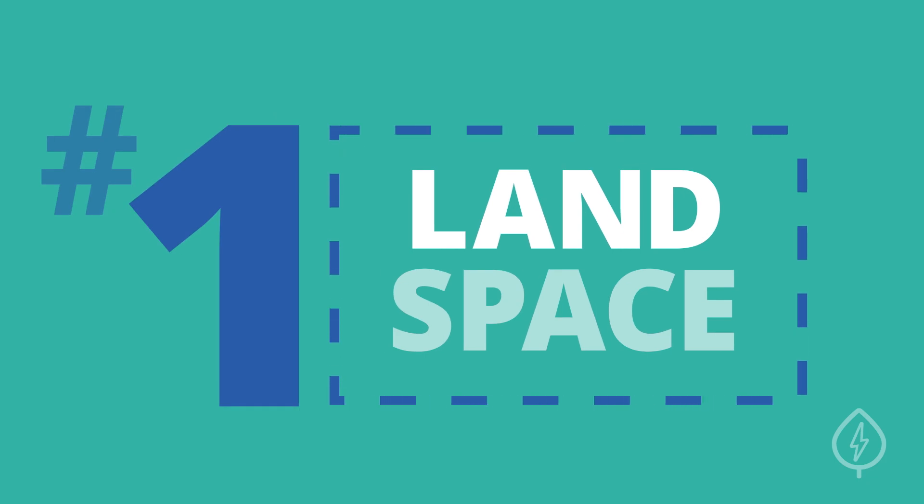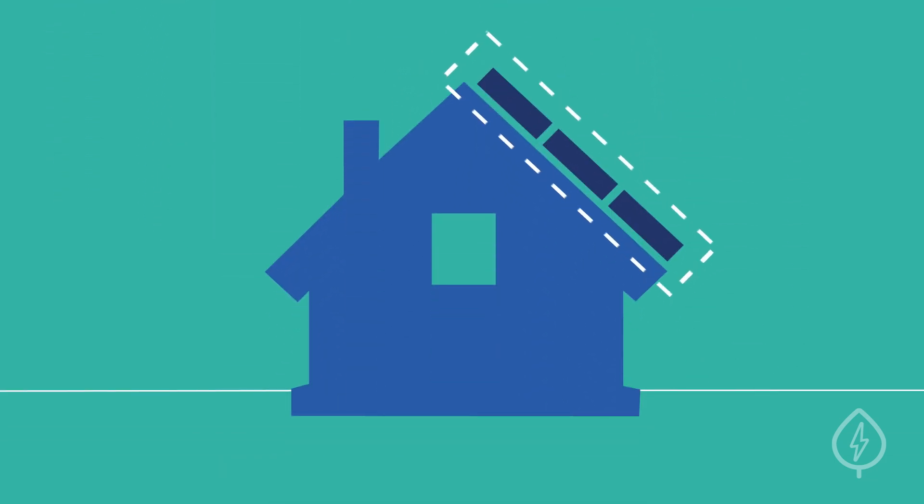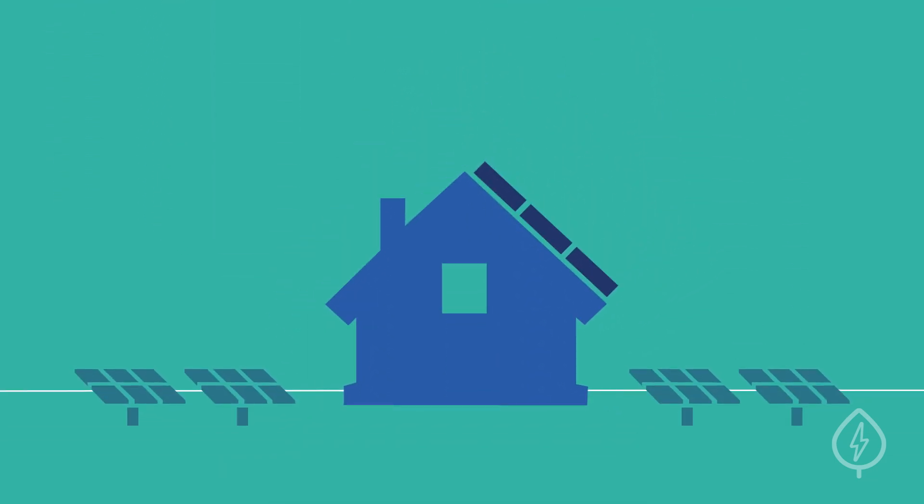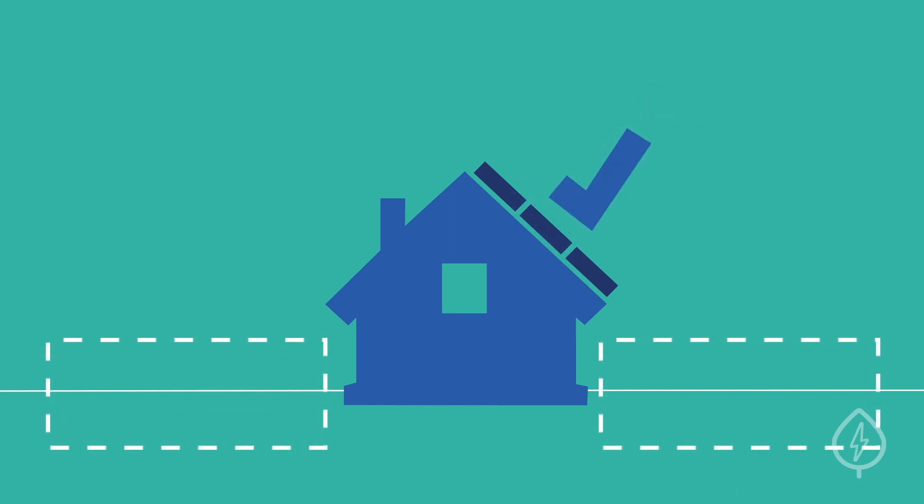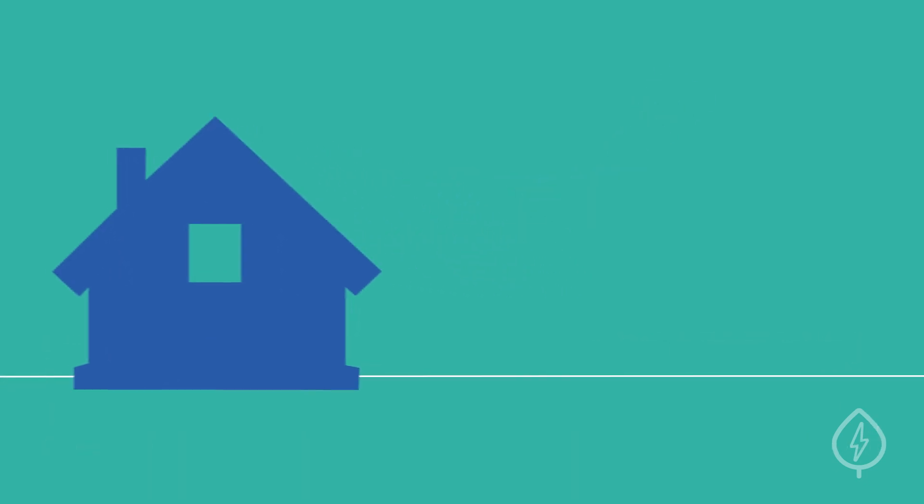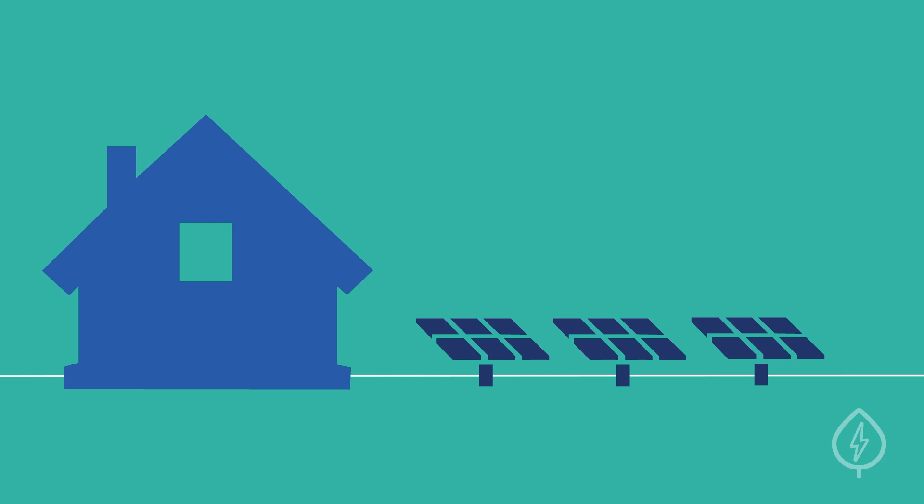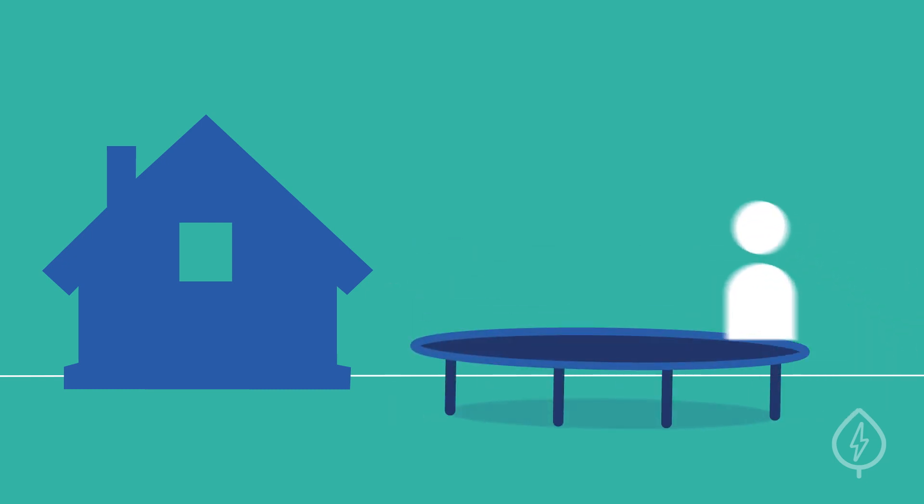Number one, land space. Unlike a rooftop solar panel system, a ground-mounted system takes up new, unused space on your property. When you put solar panels on your rooftop, you are using space on your property efficiently. However, when you install a ground-mount system, you are using space on your property that can be used for another purpose.